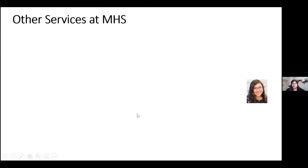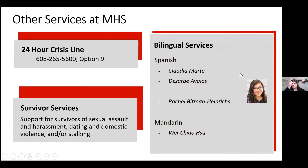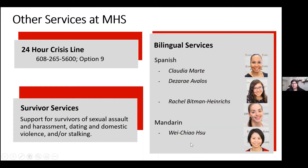MHS also has bilingual services. If you don't want to speak to your counselor in English or don't feel comfortable, there are Spanish-speaking and Mandarin-speaking counselors available. Even if you are comfortable in English, you can still request a provider with a specific identity — such as an Asian provider or a female provider. MHS also has survivor services for survivors of sexual assault, harassment, dating or domestic violence, and stalking.